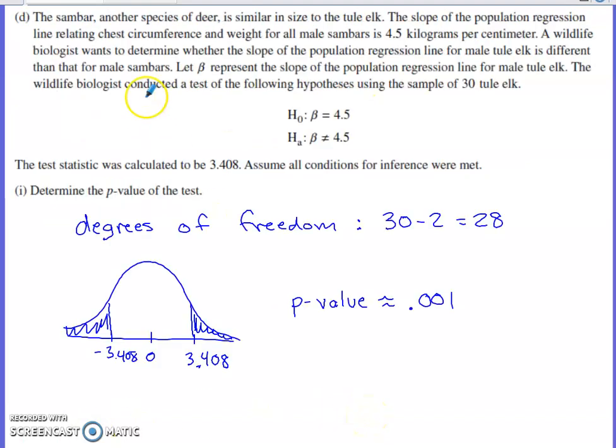Last part says there's another species of deer that's similar in size to the tule elk, and the slope of the population regression line relating chest circumference and weight for this type of deer, male sambars, is 4.5 kilograms per centimeter. The biologist wants to determine whether the slope of the population regression line for the male tule elk is different. So we're going to let beta represent the slope of the population line for the male tule elk. The wildlife biologist conducted a test with the following hypotheses using the sample of 30 tule elk. The sandbar species would gain 4.5 kilograms for every one centimeter increase in chest circumference.